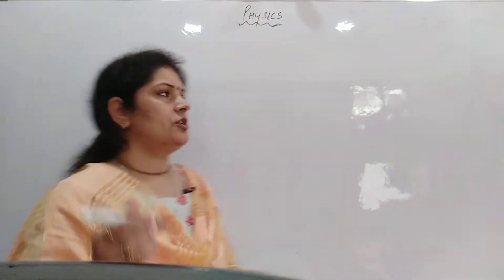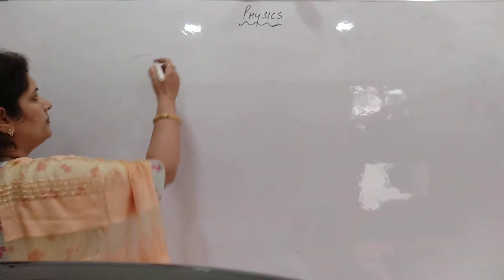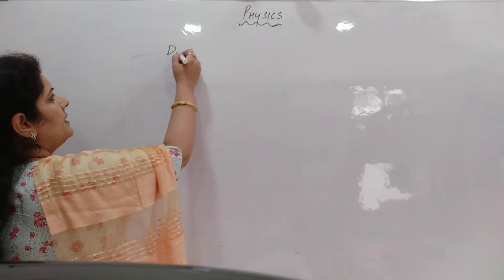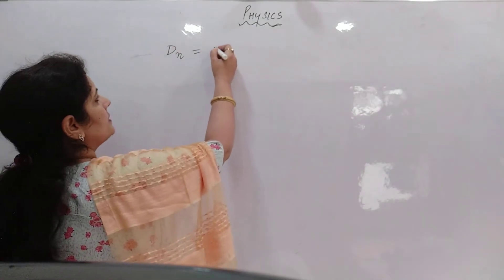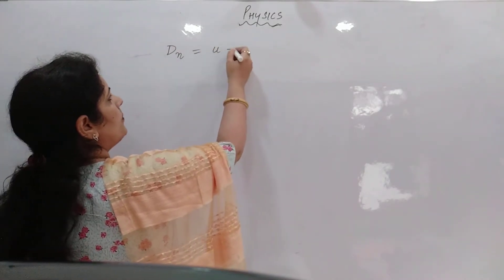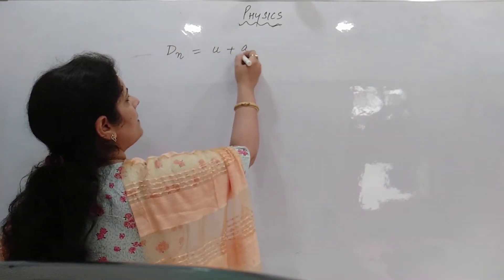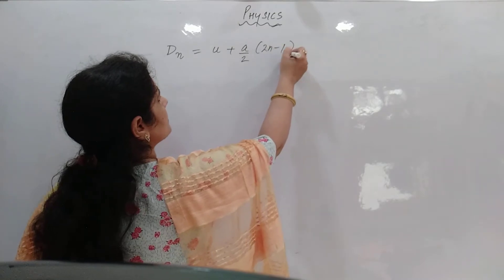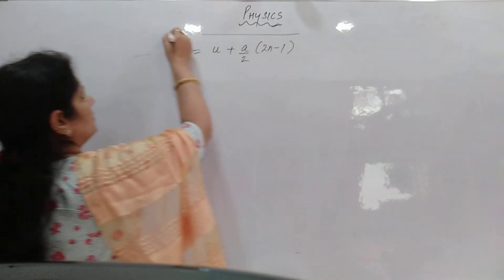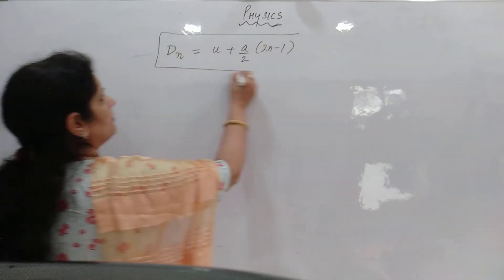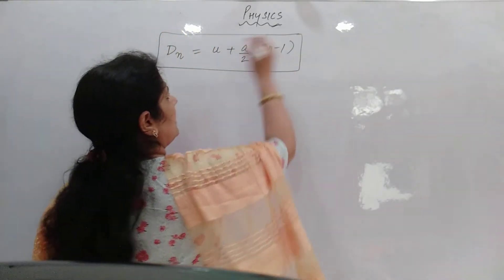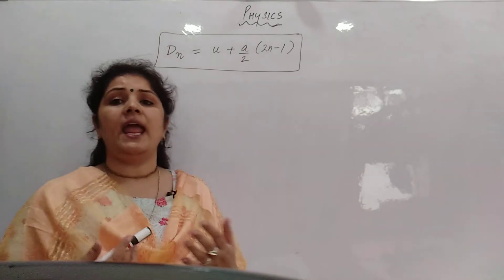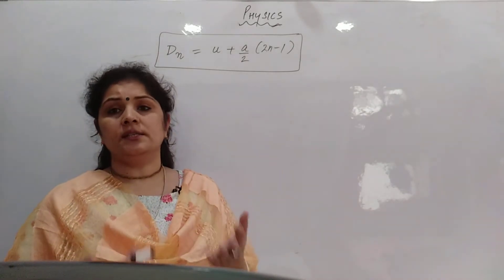According to the fourth equation of motion, distance travelled in nth time is u plus a by 2, into 2n minus 1. This is the distance travelled in the nth second.